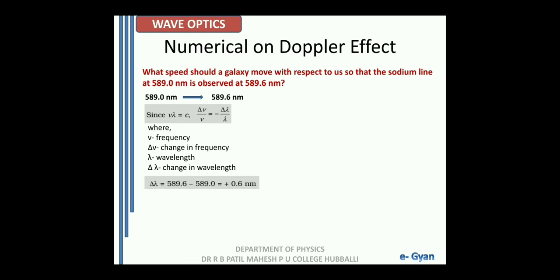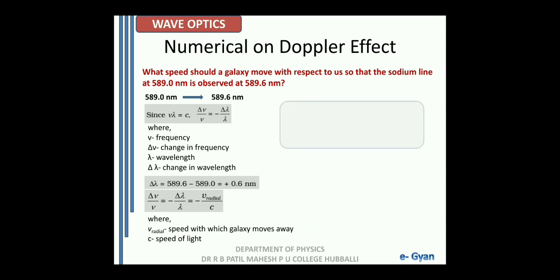Change in wavelength can be calculated as 589.6 minus 589, which is equal to 0.6 nanometer. Now delta nu upon nu is equal to minus delta lambda by lambda, which is equal to minus V radial divided by C, where V radial is the velocity with which the galaxy moves away from us and C is the speed of light. V radial is equal to C into change in wavelength divided by wavelength, that is 0.6 divided by 589, giving 3.06 into 10 raised to 5 meter per second, or 306 kilometer per second.